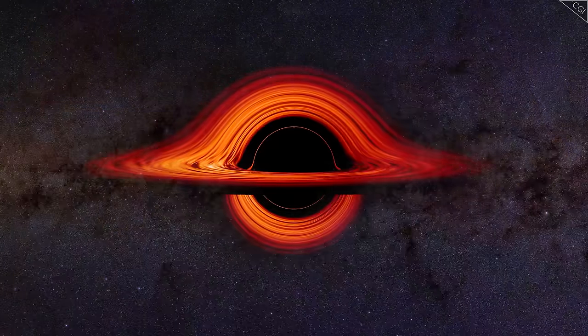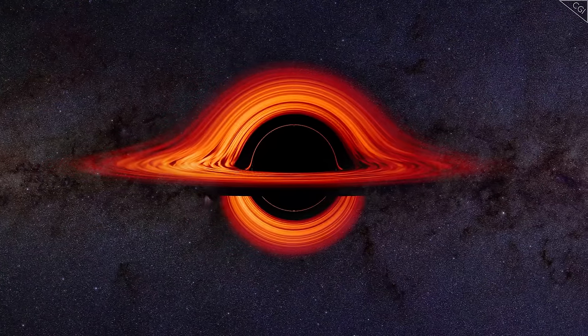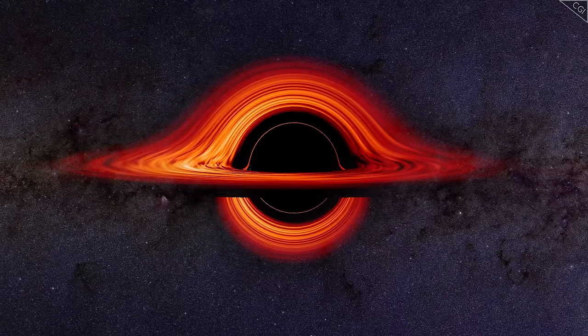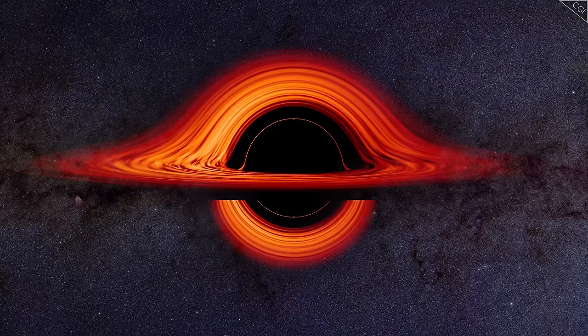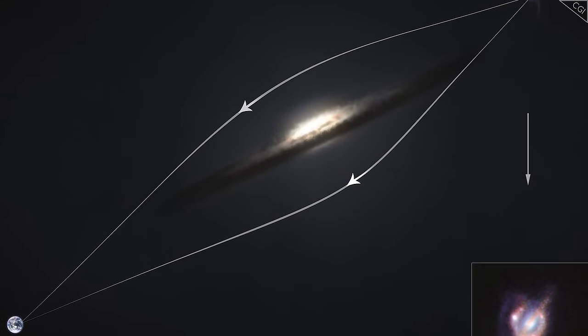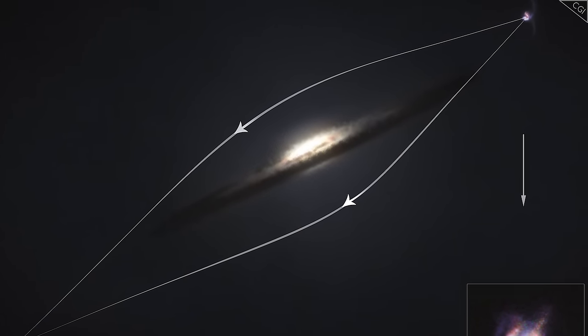Instead, the rays are curving towards us, as the black hole's gravity pulls them in. You are seeing the top and bottom of the ring at the same time. Light being bent by gravity. What do I mean by that? Actually, this is an excellent example of our second kind of universe.